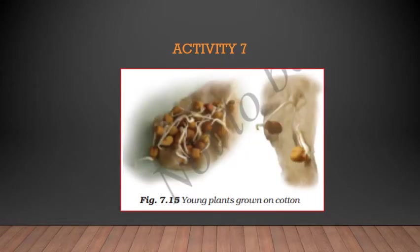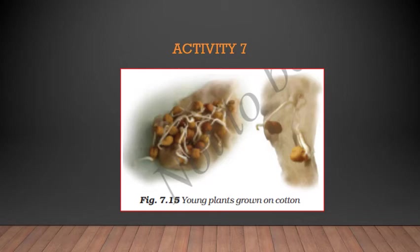Now let us do another activity. We would require seeds of gram and maize, cotton wool, katori (bowls), and some water. Take two katori, place some wet cotton in them, put three to four seeds of gram in one and maize in the other. Keep the cotton wet by sprinkling water every day until the sprouts have grown into young plants. After a week, try to separate the young plants from the cotton — it is not easy to separate them.